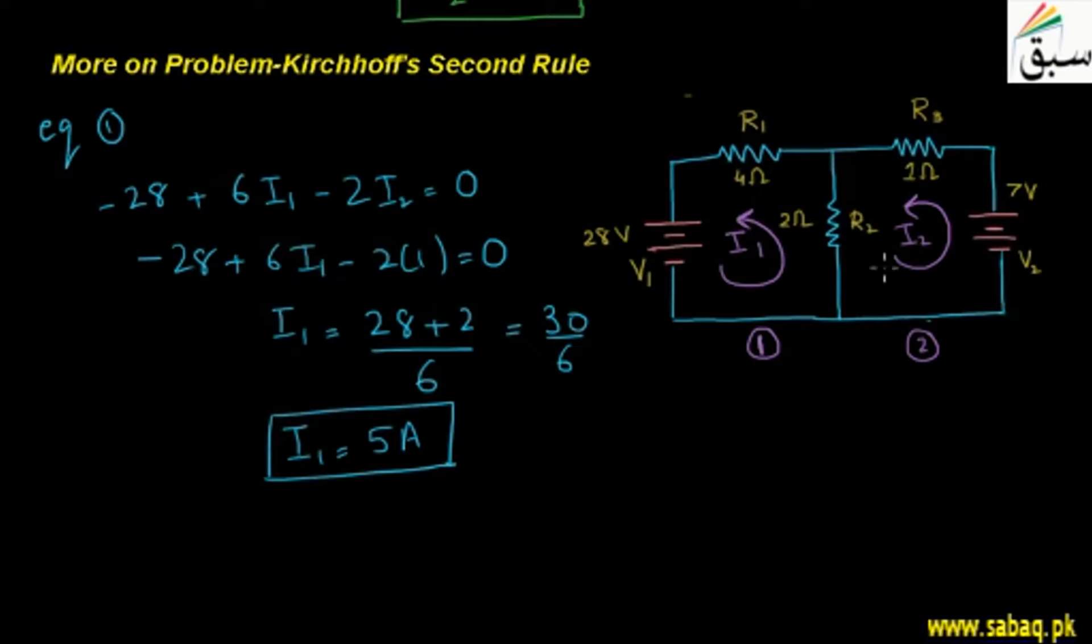But we can see that the two currents are in opposite directions. I1 is in upward direction, so I2 is in downward direction. That means the current in R2 will be these currents. I1 minus I2 will be the current which is in R2.